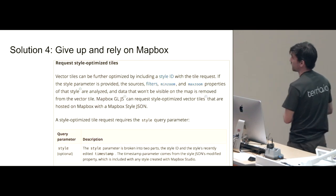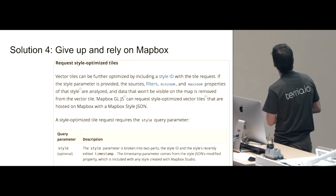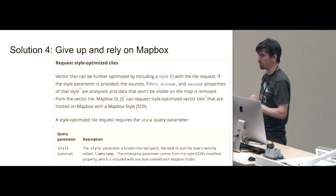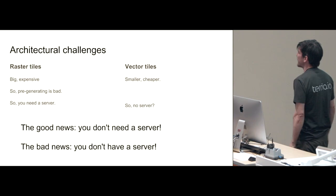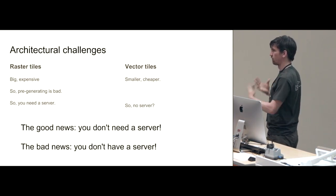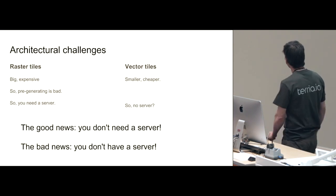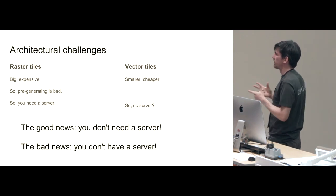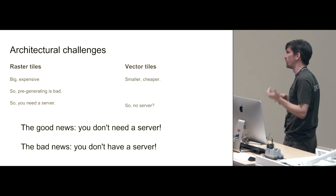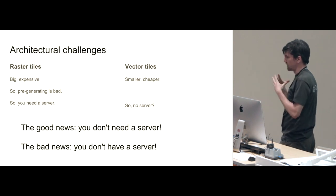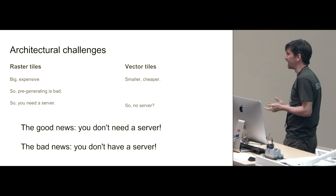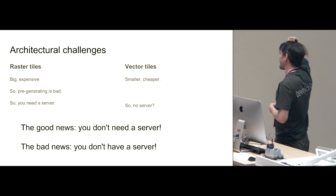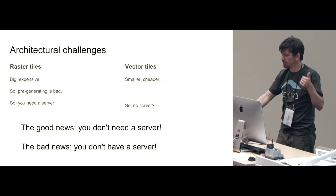Or you can give up and just upload the thing to Mapbox — pay them — and they will optimize their vector tiles to match the style you associate with it. Somewhere there's got to be a cleaner way of doing this yourself, but I'm not aware of what it is. So those are the inherent technical challenges. But there's also an architectural challenge: with raster tiles, they're so expensive to compute that pre-generating your entire tile set doesn't make sense, so you need a server with a database. Once you switch to vector tiles, you realize you can pre-generate everything, upload to a tile host, put your static front end somewhere else, and you probably don't need a server anymore — which means no database. Good news: don't need a server. Bad news: don't got a server.